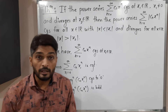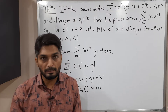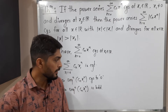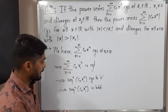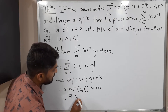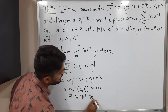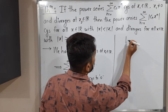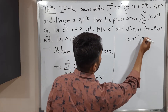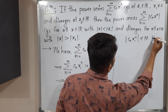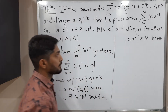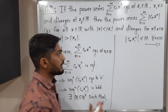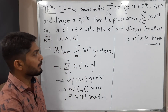When we say the sequence is bounded, we can find a positive real number M such that the mod of each term is less than or equal to M. So therefore, we can find some positive real number M such that mod of cn·x1^n is less than or equal to M for all n in the natural numbers. Let us call this inequality number 1.